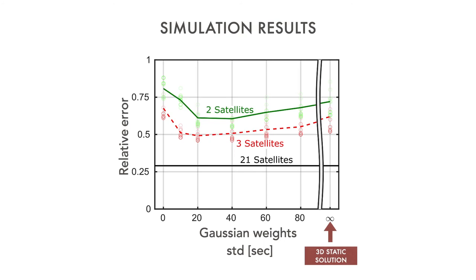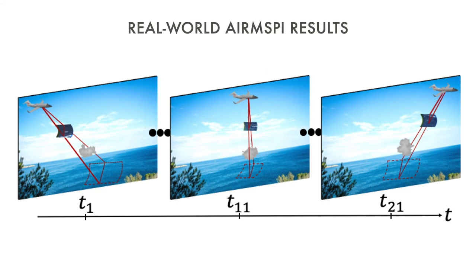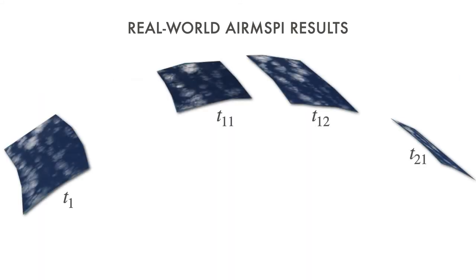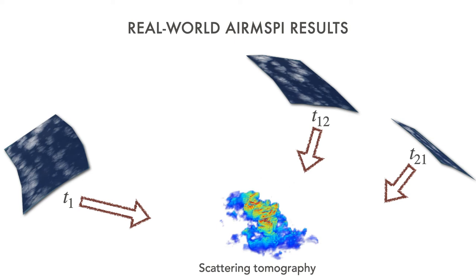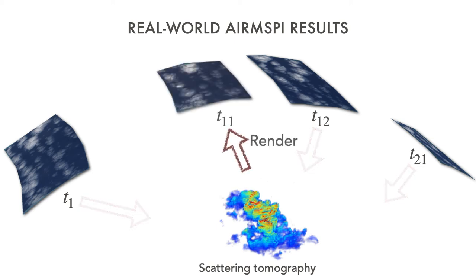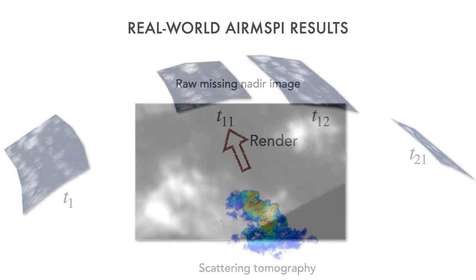The state of the art assumes a static cloud during sequential imaging. Relative to that, our solution reduces the retrieval error. We also demonstrate this on real-world data acquired by NASA's AirMISP with 21 viewing angles. There we have no ground truth, so we exclude the nadir image from the recovery process and use 20 out of 21 raw views. Afterwards, the missing nadir view is rendered using the estimated cloud and compared to the ground truth missing view.